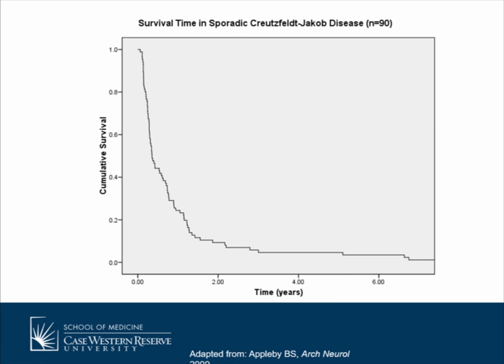If you look at how long people survive with prion disease, it's a very quick illness. The vast majority of people pass within one year. About a quarter can live longer — some two or three years, but that's unusual. The vast majority will pass away within four to six months of symptoms starting.